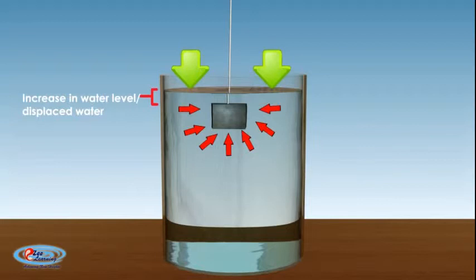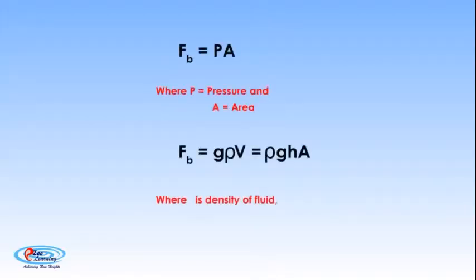Buoyant force equals density of fluid into volume submerged into gravity. In terms of pressure, buoyant force F_b is given by P times A, where P equals pressure and A equals area. In terms of volume, height and area, it is given by F_b equals g rho V equals rho g H A.